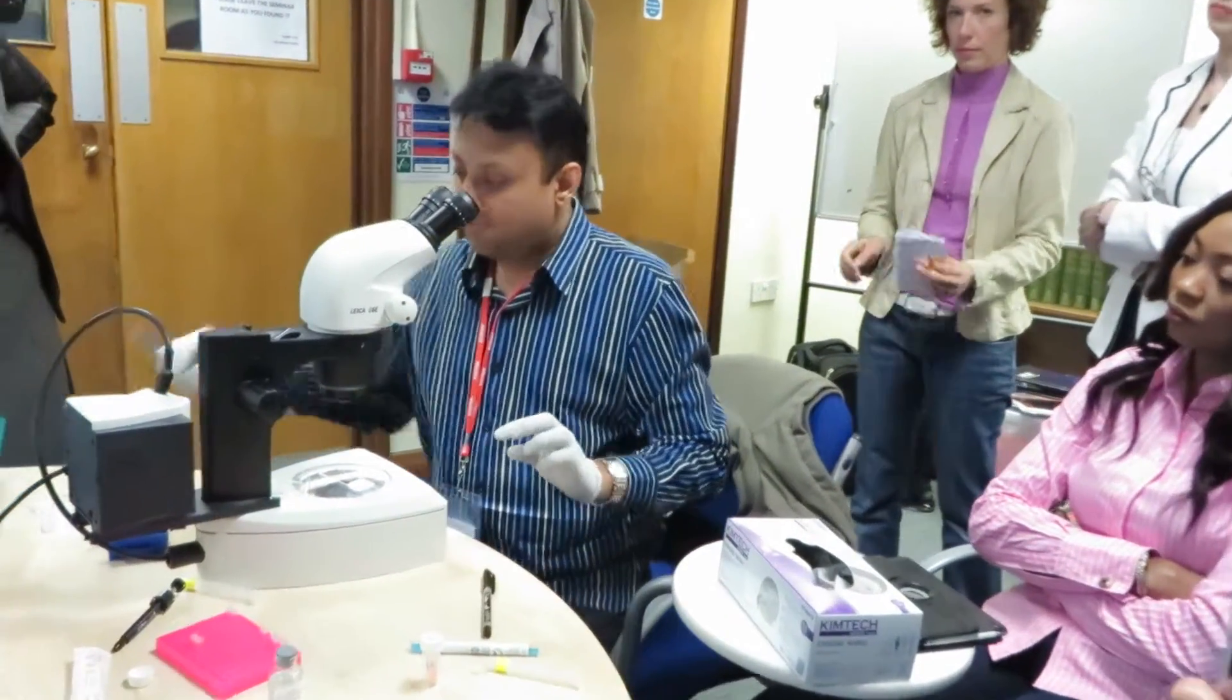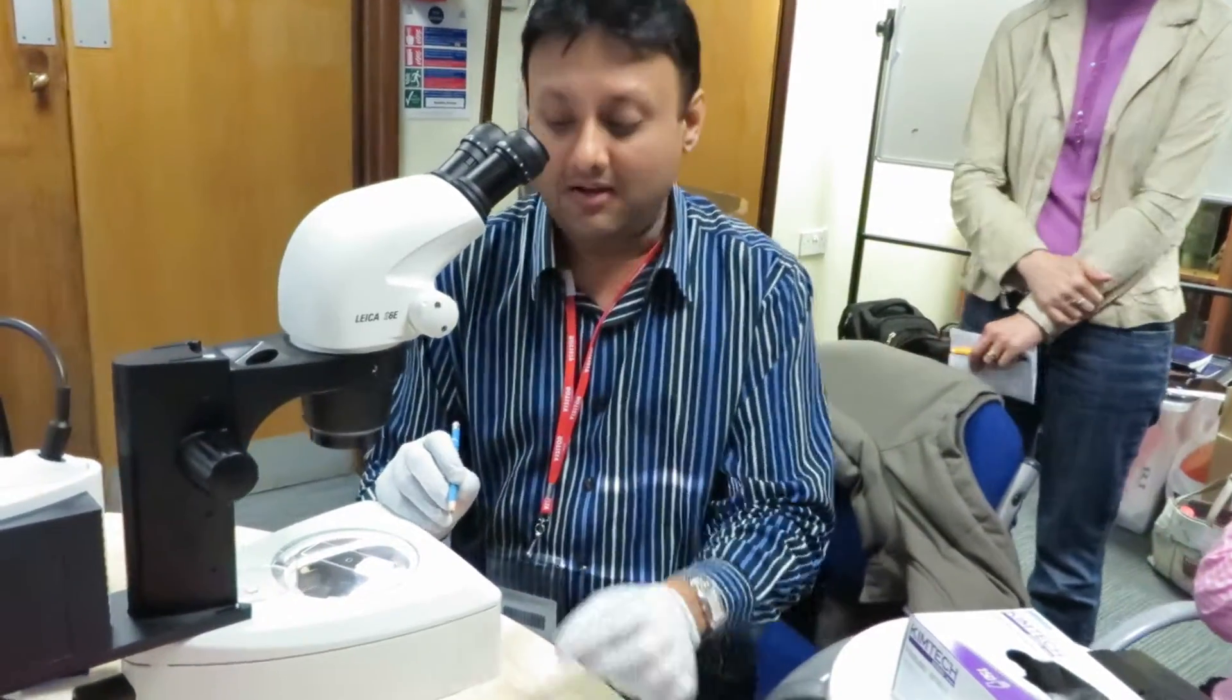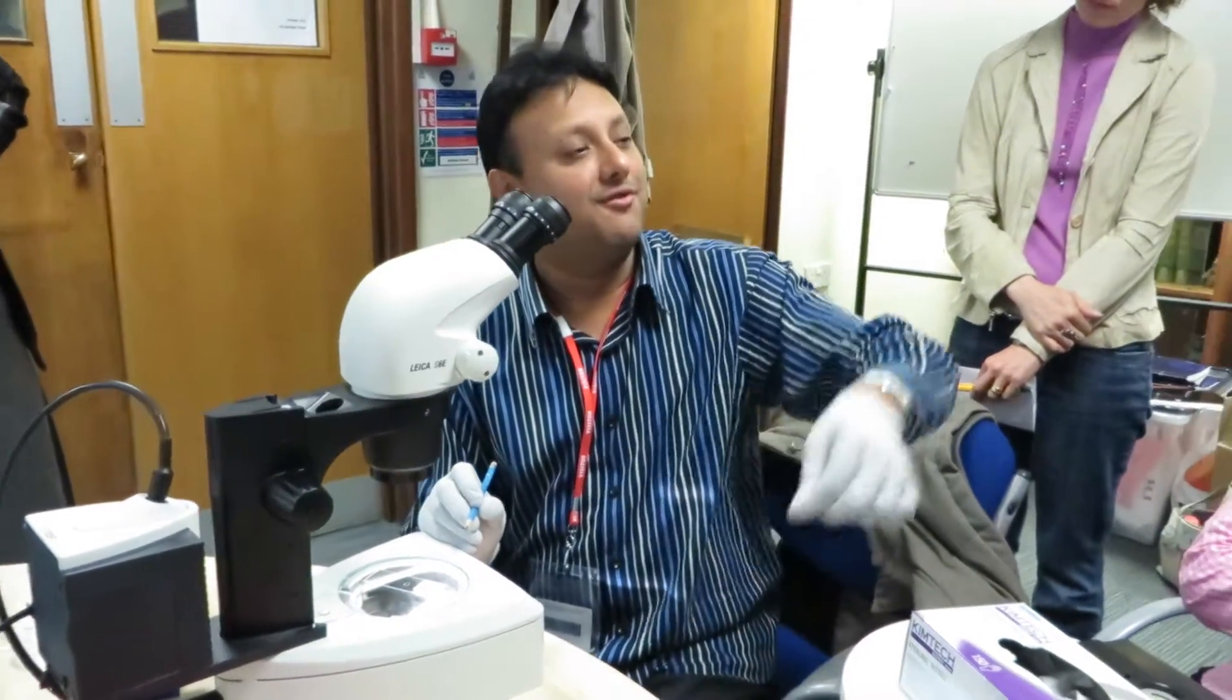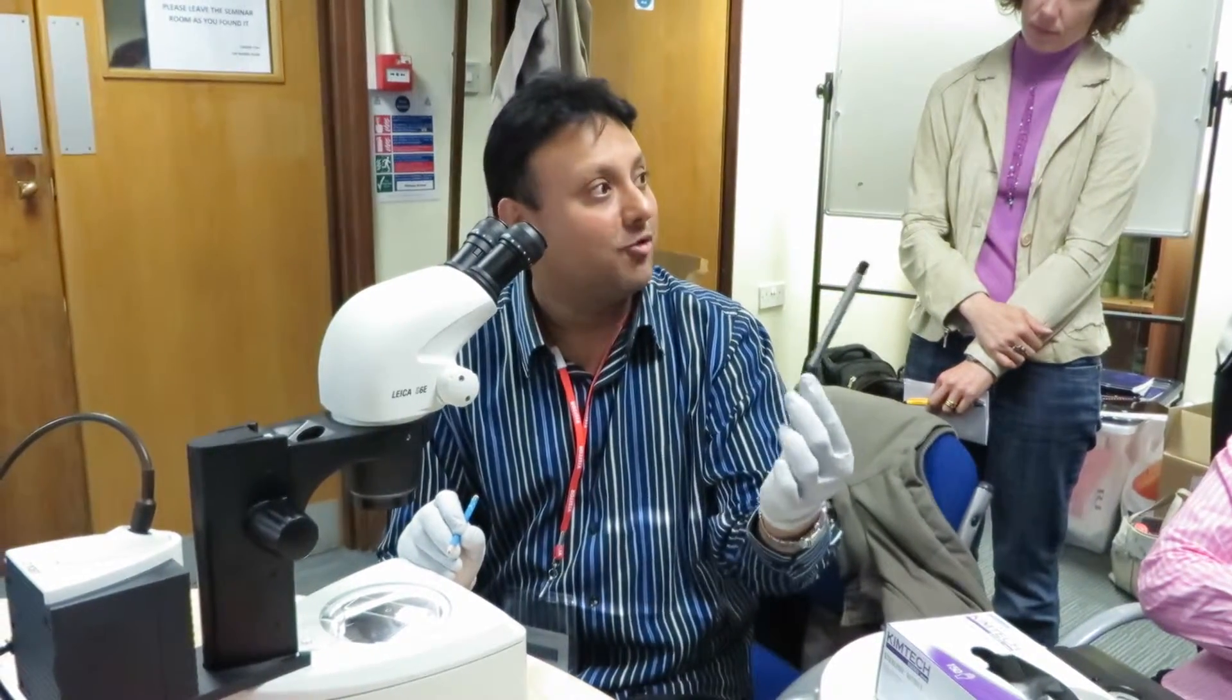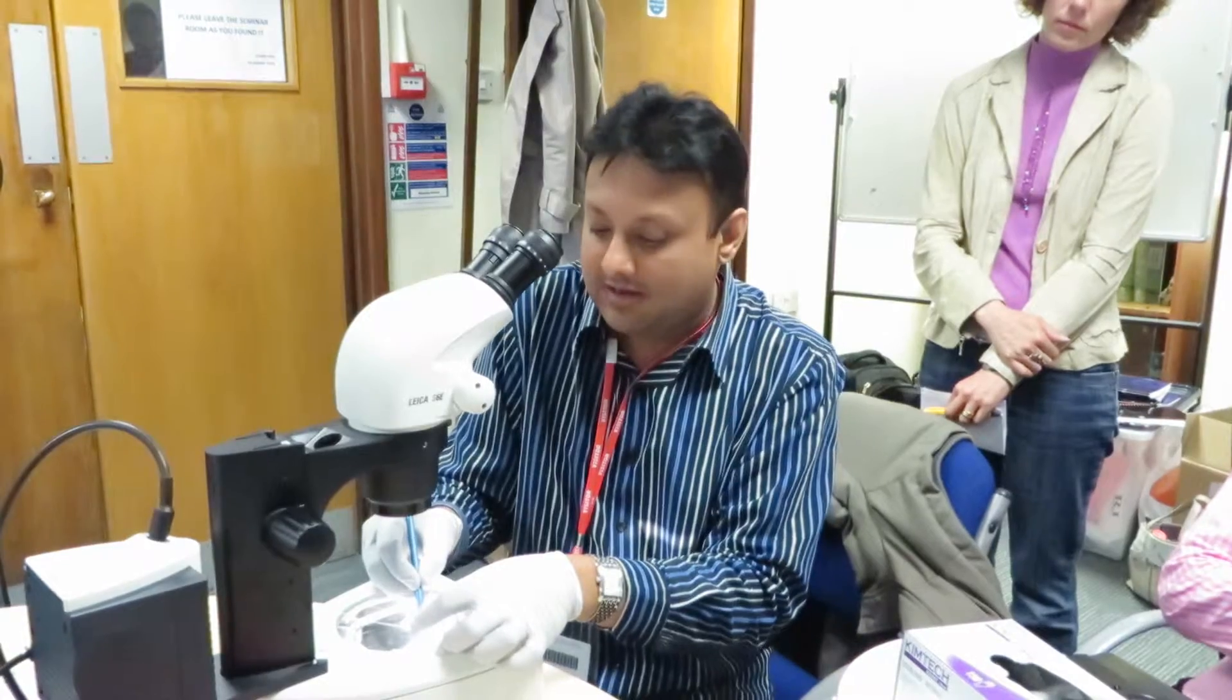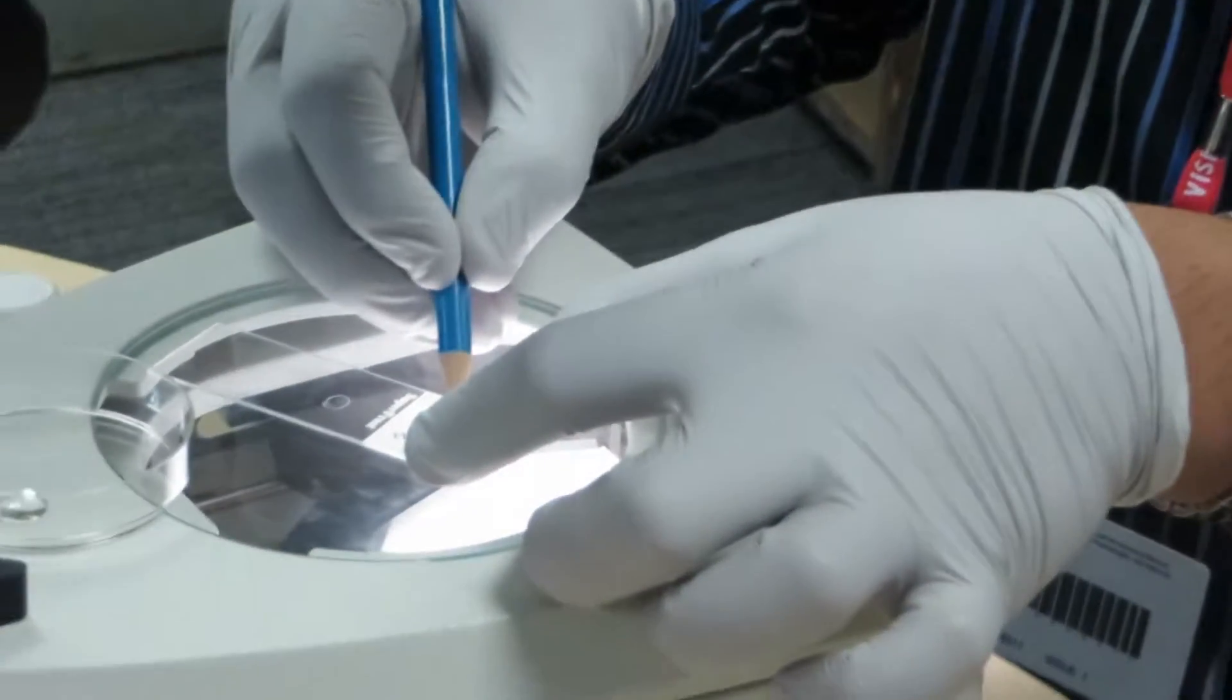Always label the slide in pencil because if you use an alcohol-based pen, during the whole dehydration process when they move the slides from 70, 90, 100 ethanol, the alcohol pen will wash off. So label it in pencil. The way to label it is the patient's name and embryo number.